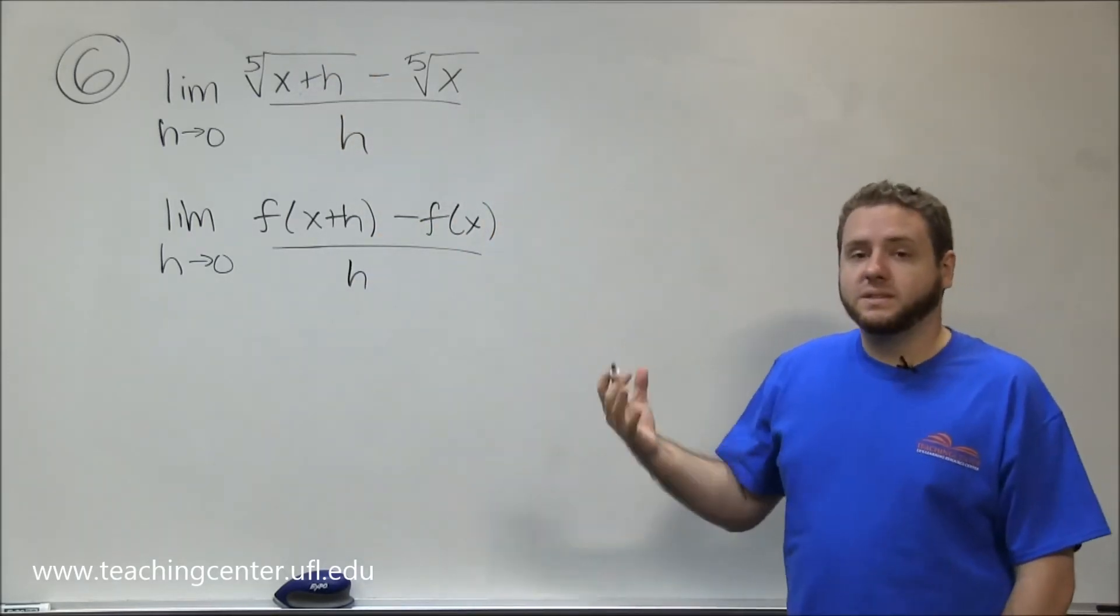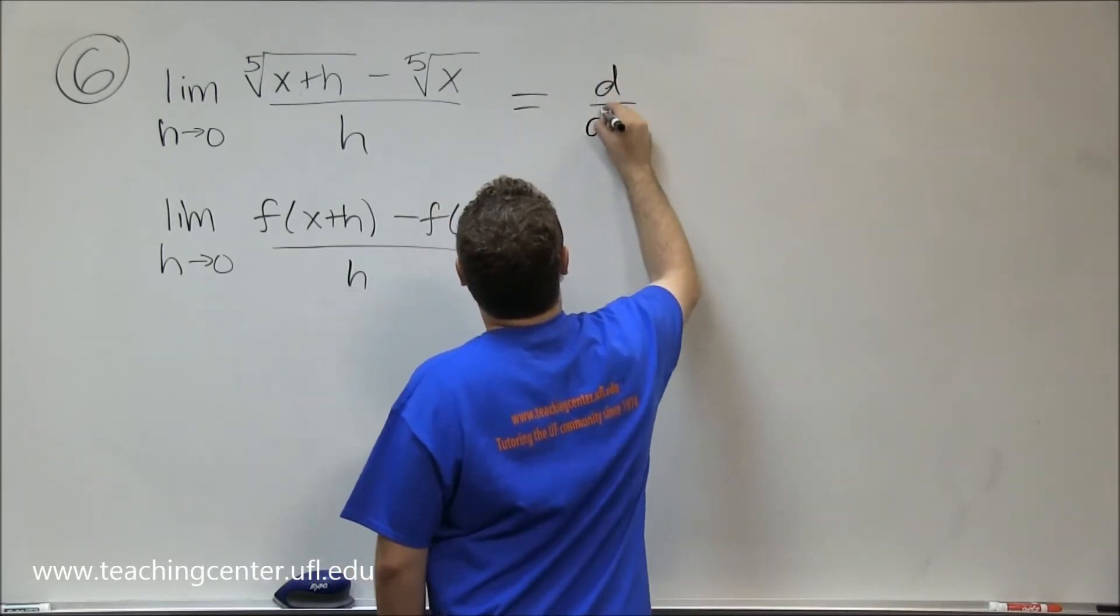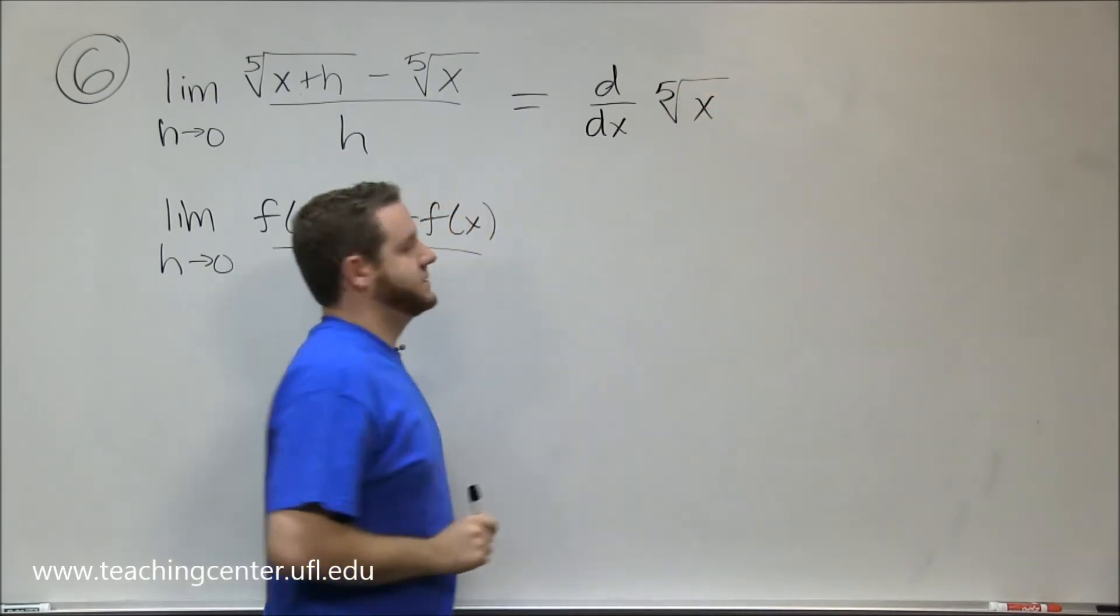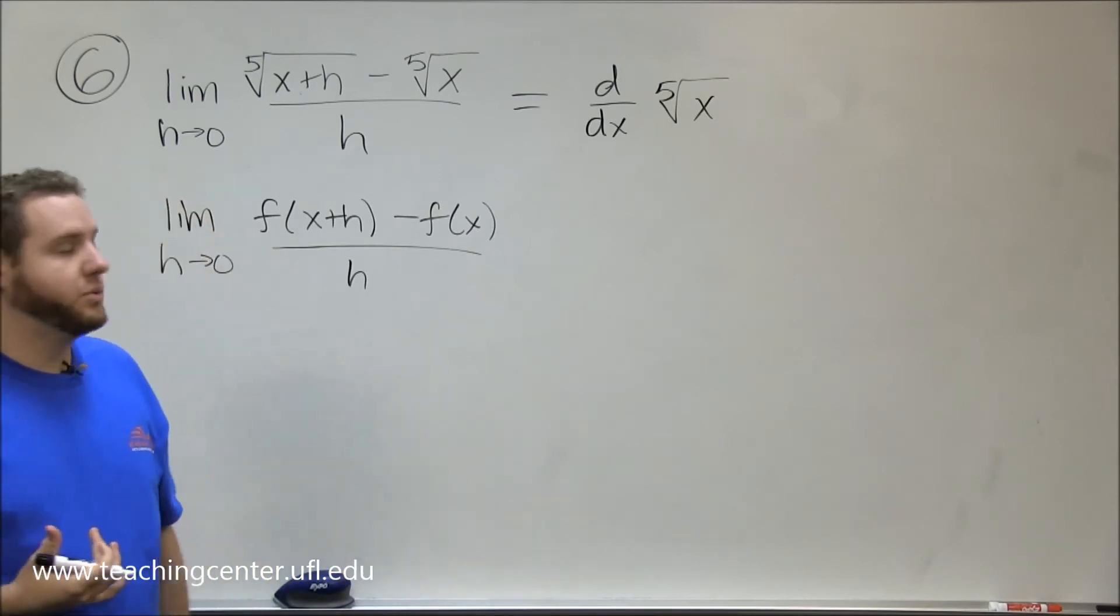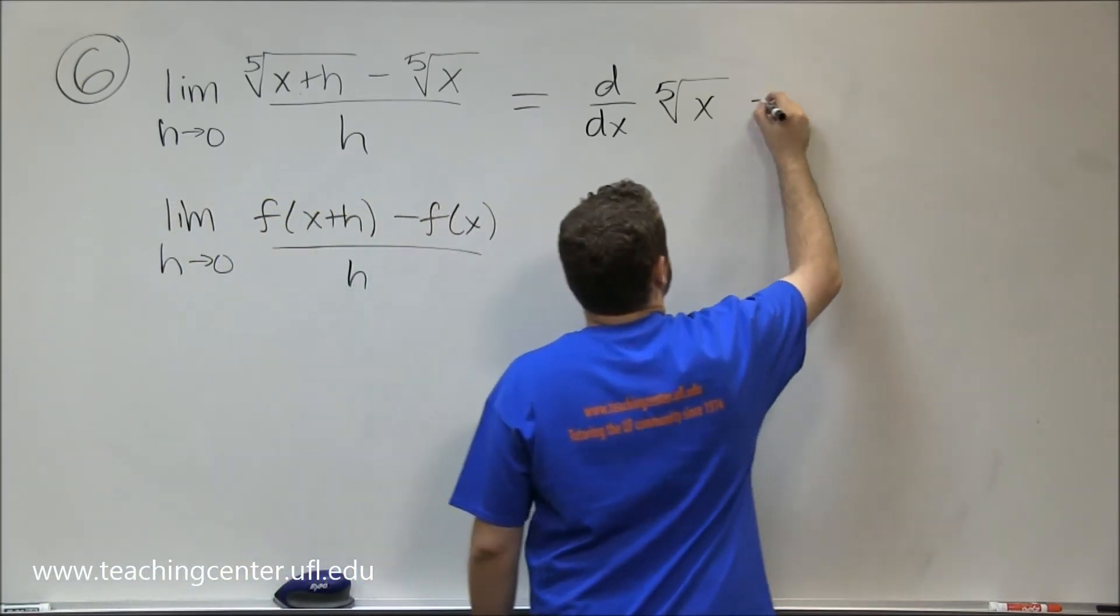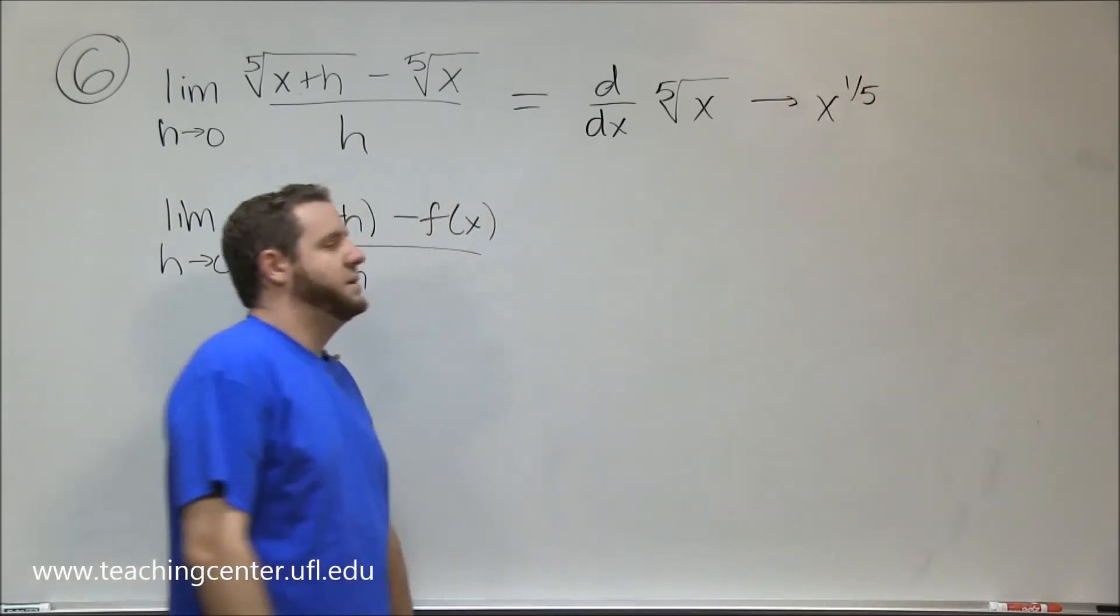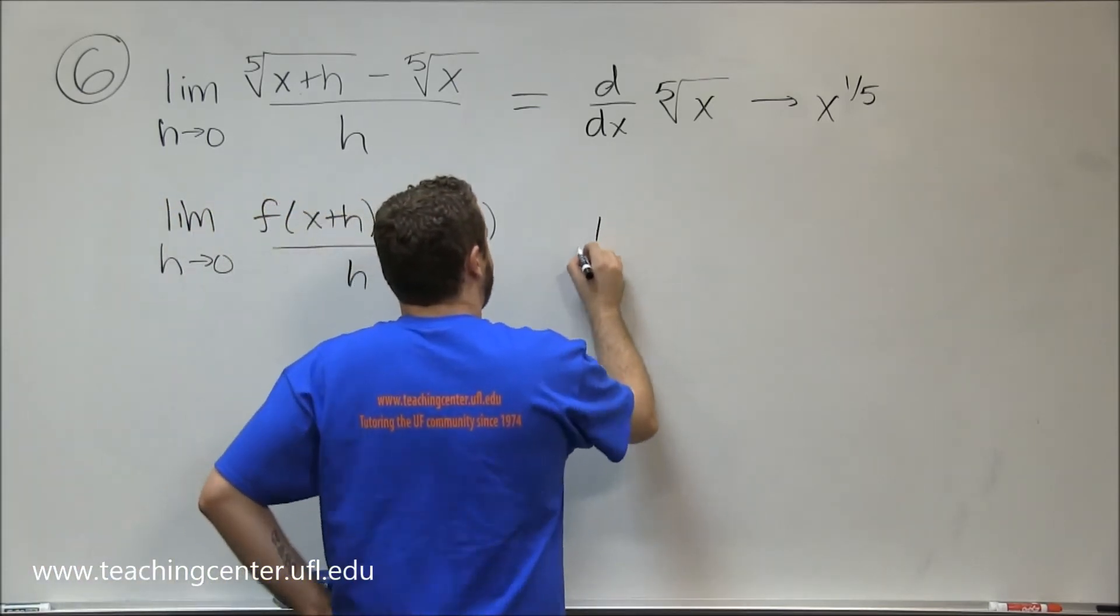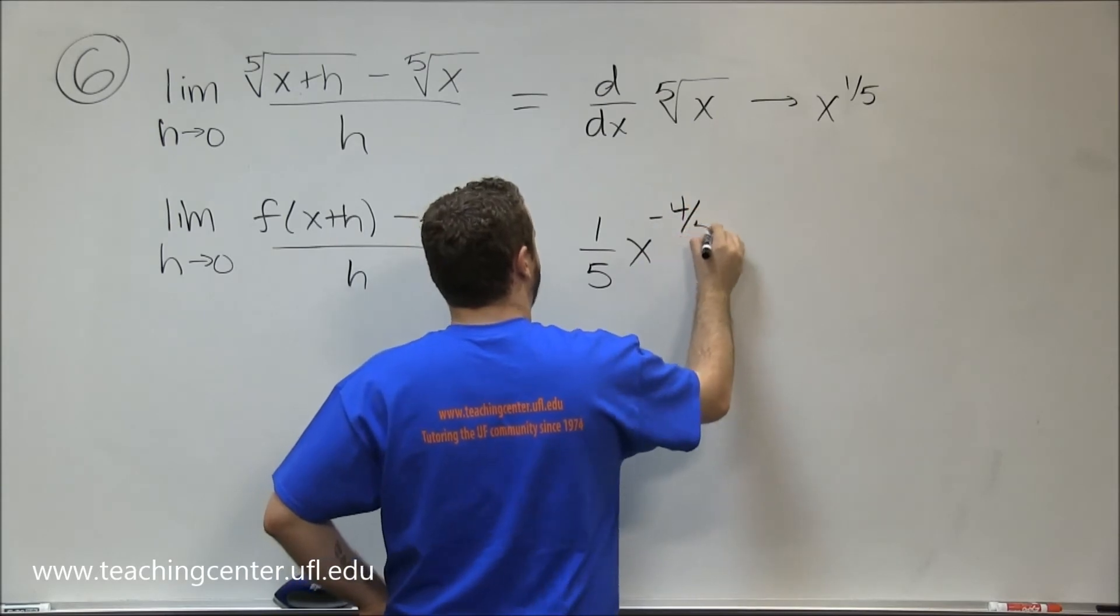So essentially this is asking you to do what is the derivative of fifth root of x. And that's what we need to figure out. That should be pretty simple to do by the power rule. Remember that fifth root of x can be written as x to the one-fifth power. And to do that derivative we can just do our power rule. So our derivative would be bring the power down, lower the power by one which would give us negative four-fifths.